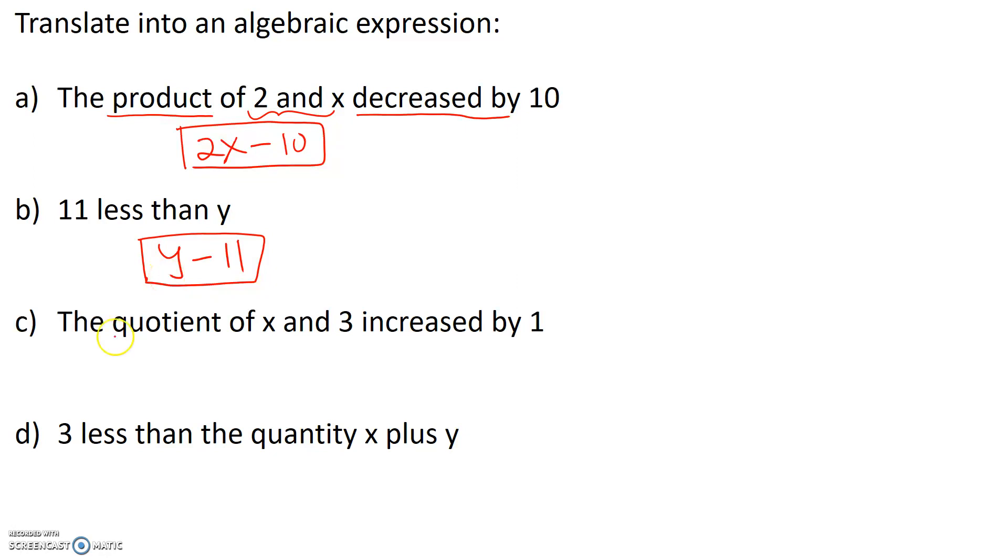The quotient, which means division, of x and 3. So what is the quotient of? It's the quotient of x and 3, and that's increased by 1. So we have the quotient of x and 3 increased by 1.